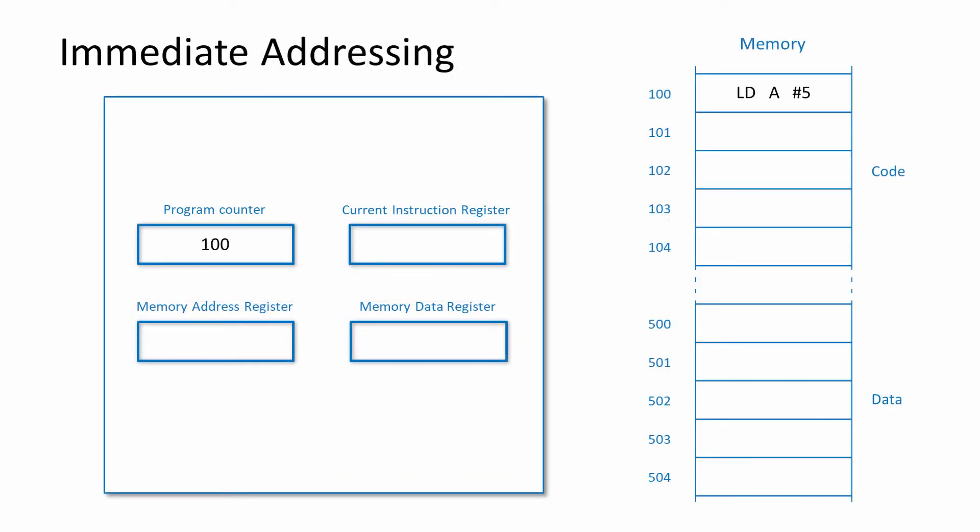Here you can see a diagram of the central processing unit and some of its registers on the left. The main memory is shown on the right with an area for program code and an area for data. The processor's program counter is pointing to location 100, so this location contains the next instruction to be fetched. This particular instruction will load the value 5 into the processor's accumulator register when it's executed. The accumulator isn't shown in the diagram — we're more interested in the fetch part of the cycle.